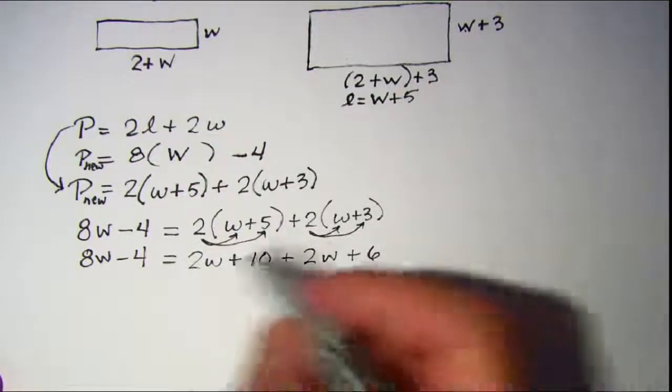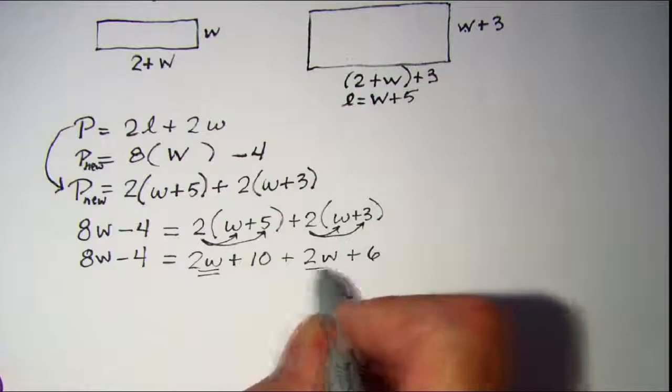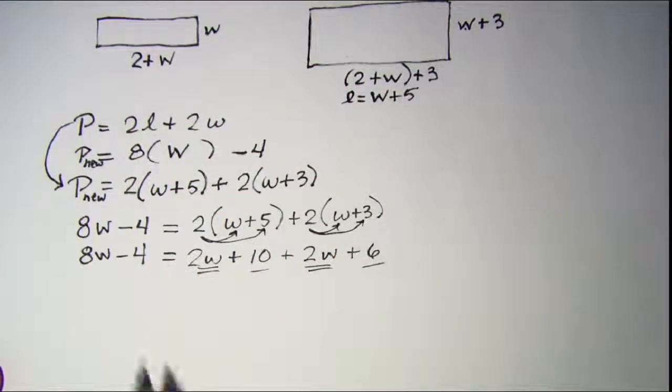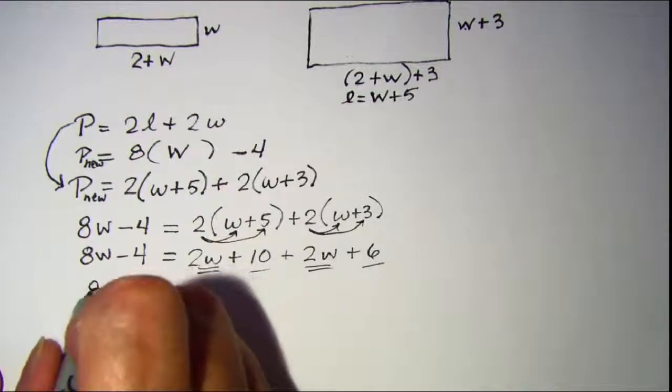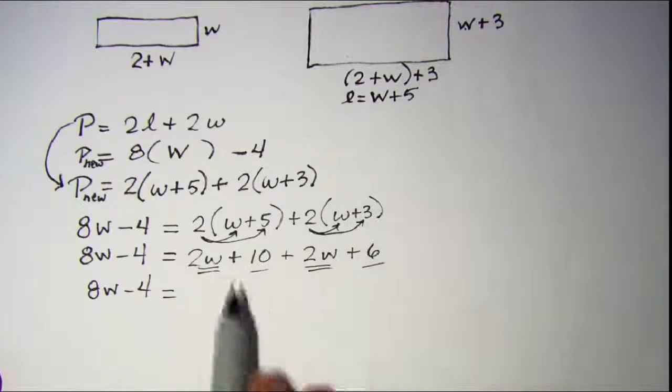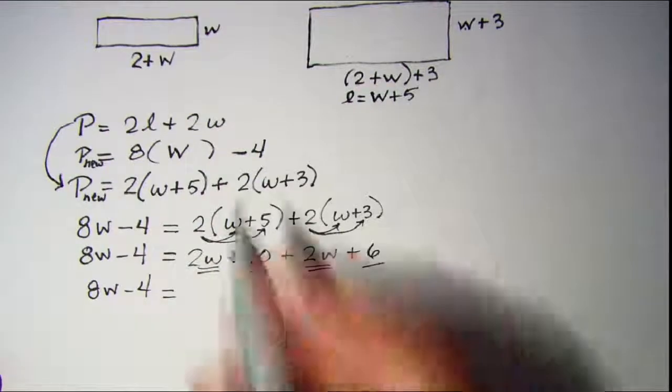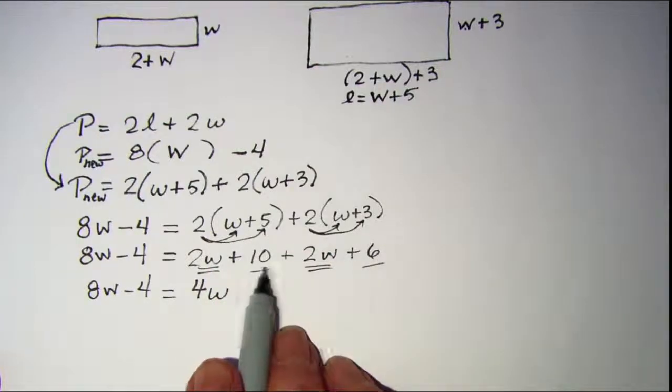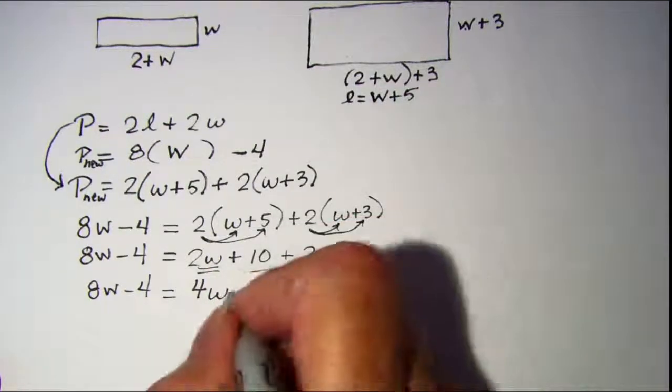Let's combine like terms. I'll just copy on the left: 8w - 4 equals. On the right, 2w + 2w is 4w, and 10 + 6 is 16. So 8w - 4 = 4w + 16.